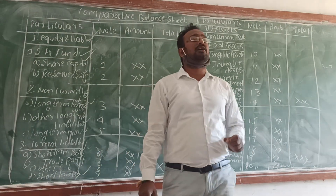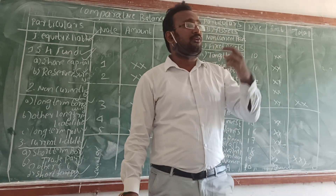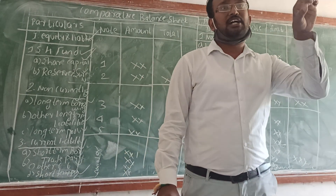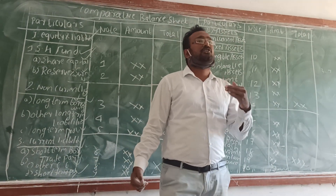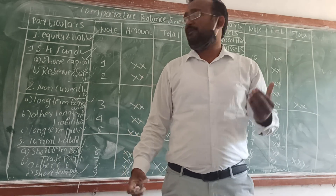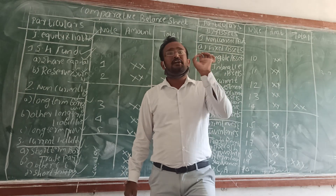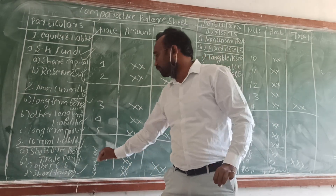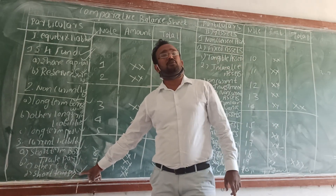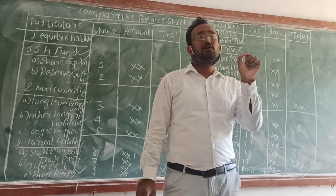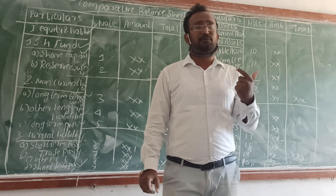The last one under current liabilities is short-term provision. Short-term provision includes provision for taxation and proposed dividend. Both are called short-term provision. So under current liabilities, two very important items are: number 1, trade payable; and number 2, short-term provision. Examples of short-term provision are provision for tax and proposed dividend.